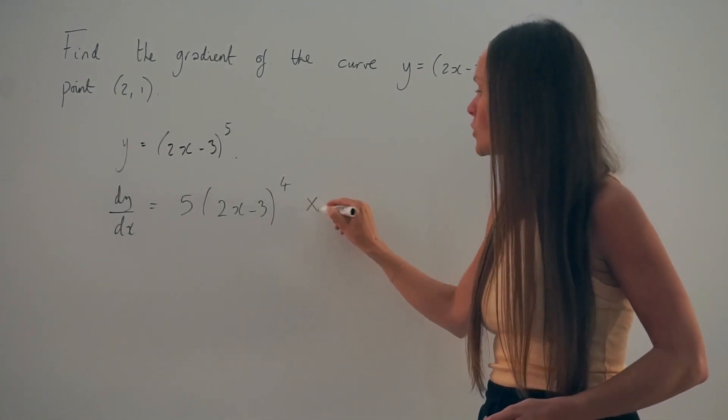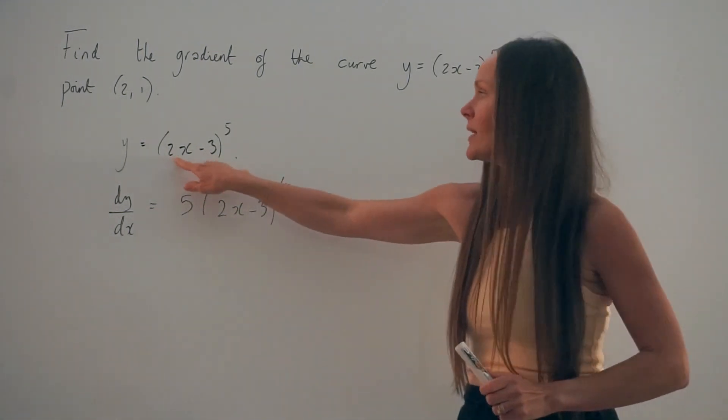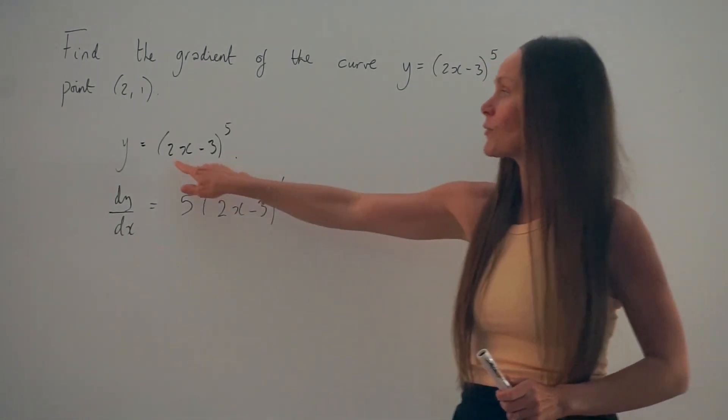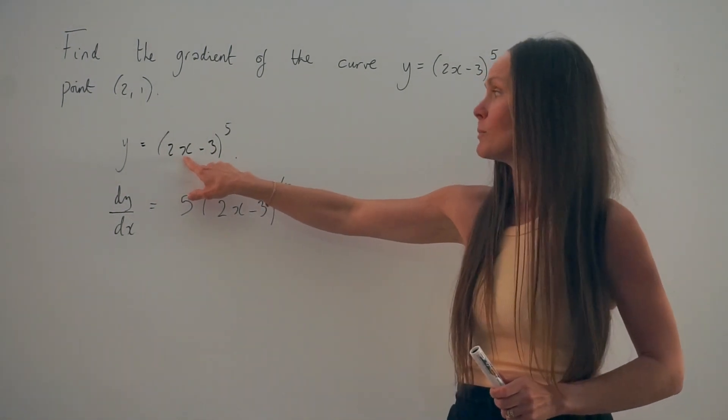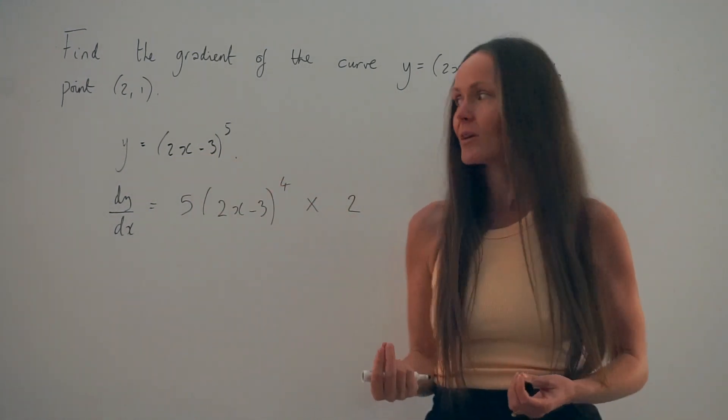Next, we have to multiply this answer by the derivative of what's inside the brackets. So I'm going to start by differentiating 2x, which gives me a positive 2, and whenever we differentiate a constant, we get 0.